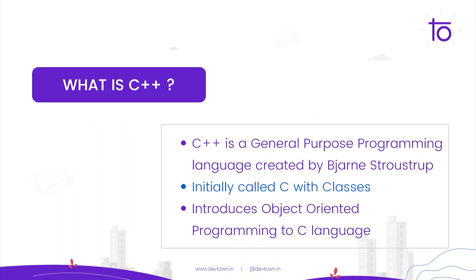C++ is a general purpose programming language created by Bjarne Stroustrup. Initially, he called it C with classes. It introduces the object oriented programming paradigm to the C language.